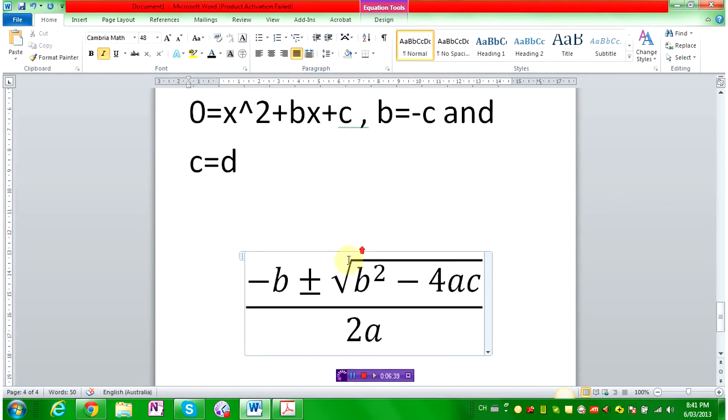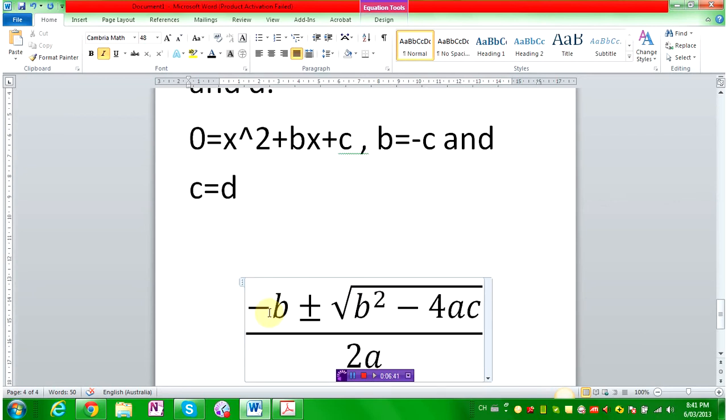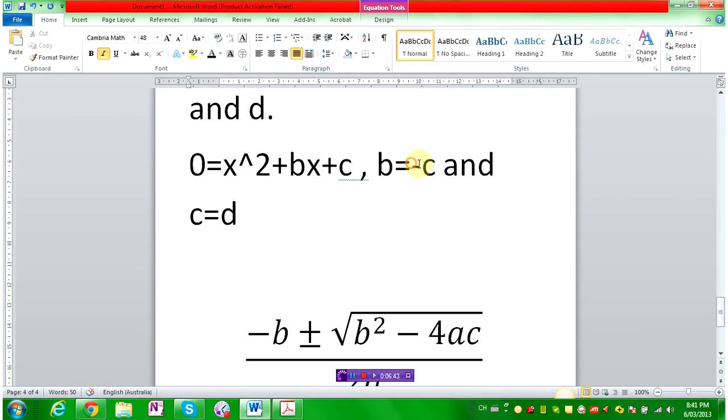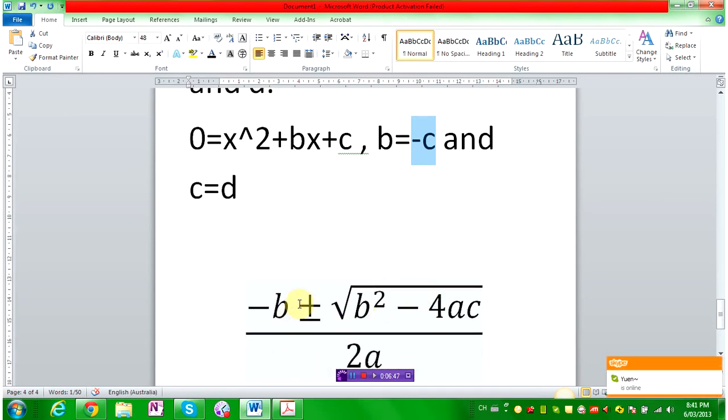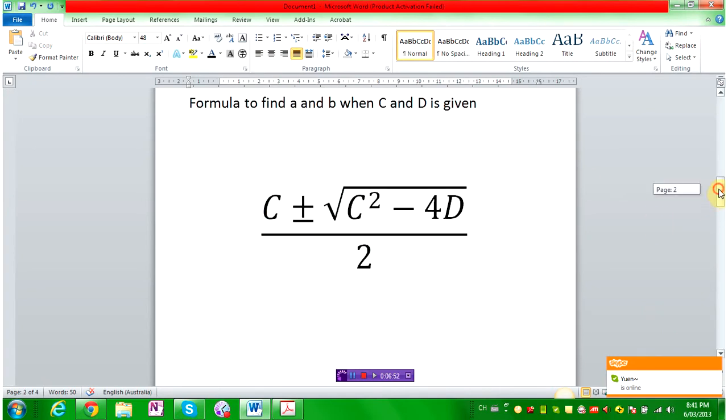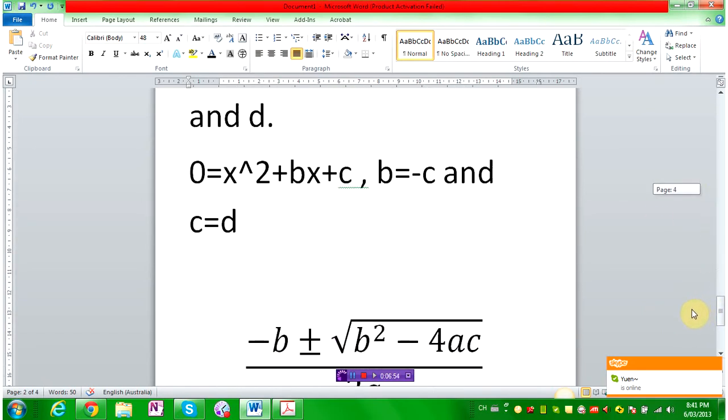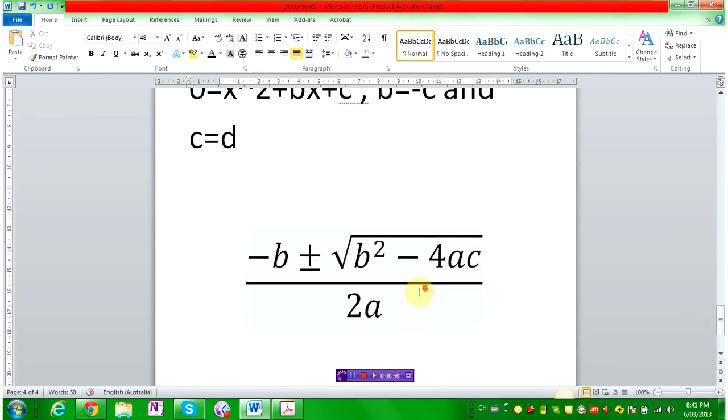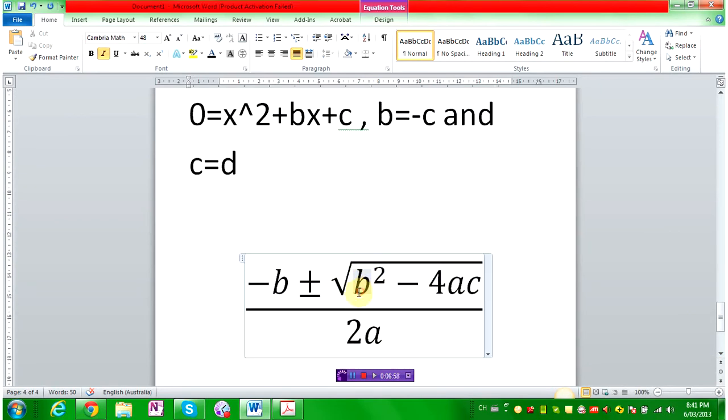And so, minus b here, you see minus b but b equals to minus C. So, minus minus C equals to plus C. That's how we got C. Just no plus and no minus. And then you have b squared, which is C squared in our case, and then minus 4ac. But, we have 4. I have 4 here.